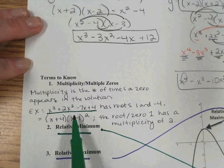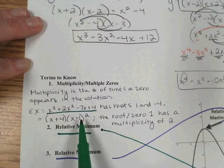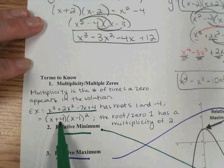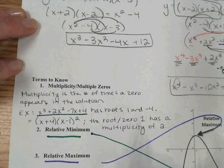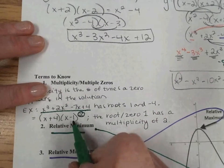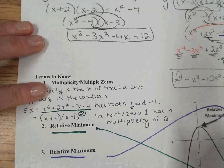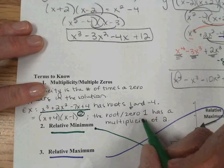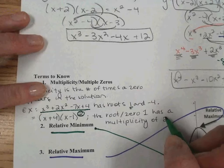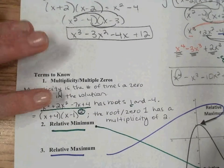The roots then, the opposite of this x minus 1, so that would make a root or a zero of 1, and then a root of negative 4 or a zero of negative 4. Now since you see this squared here, that indicates that the 1 occurs twice. So we could say the root or zero of 1 has a multiplicity of 2.